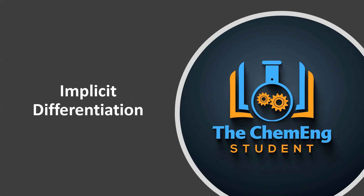Hi guys, welcome to another chemical engineering tutorial brought to you by the Keven student. In this lesson we're going to take a look at what is known as implicit differentiation. This is an advanced mathematical technique used in chemical engineering and other engineering applications, and it forms part of our engineering mathematics course.